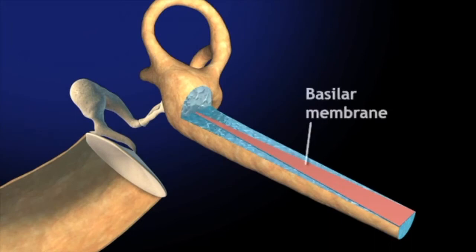First, the basilar membrane is wider at the apex than at the base by a factor of about 5.